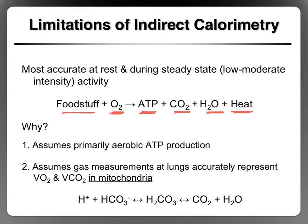Oxygen use is really easy to measure, so we measure oxygen to estimate heat production, and we quantify heat production as caloric expenditure. That gives us an idea of how much ATP we're using or how much work we're doing. We rely heavily on these linear relationships, and all of these things occur linearly if the primary ATP production is aerobic.